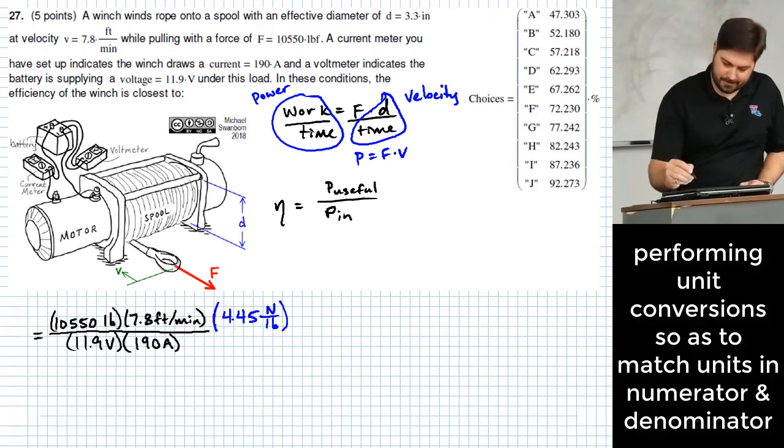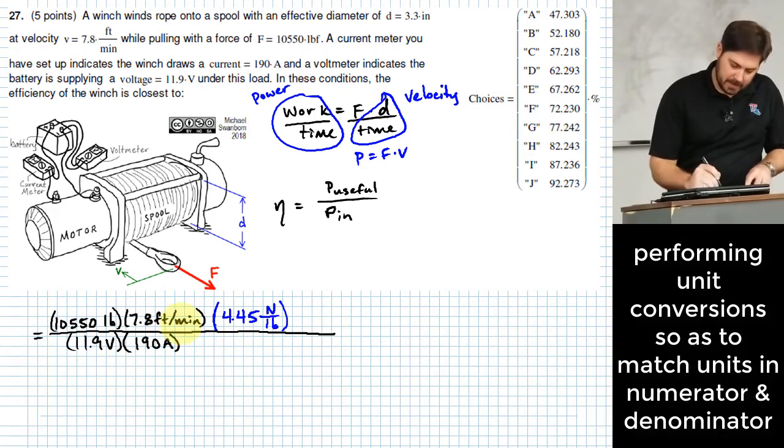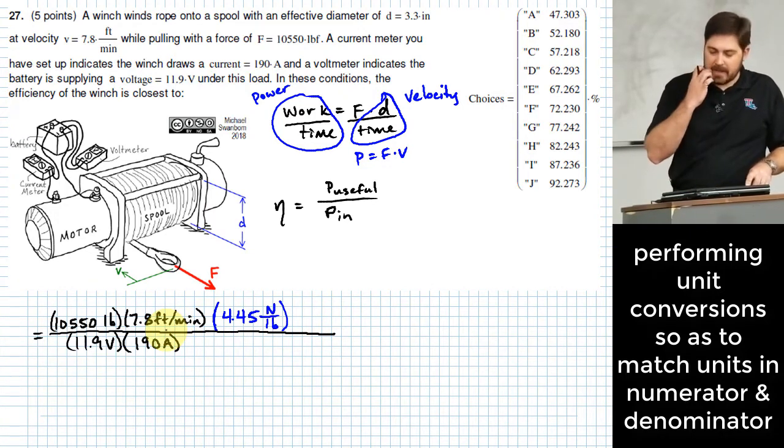So 4.45 newtons per pound. And that takes care of my pound units. What else? Feet. I need to get feet into meters somehow. And I'll say, if you are asked to remember these, sometimes there's an interesting chain you can go through to get to where you want to be.